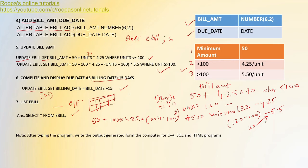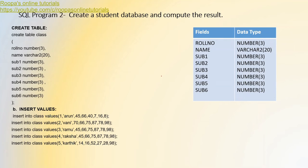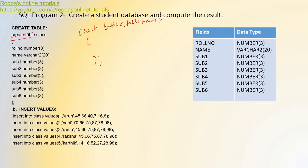Hope you understood the first program. Now let us go to the second SQL program. The second program is very easy — it is just to create a student database and compute the result. Here also the table structure is given to you in the question. To create the table, we use the CREATE TABLE command: CREATE TABLE followed by the table name. Here I have taken the table name as 'class'. You can take any table name, but remember to use the same table name throughout your program.